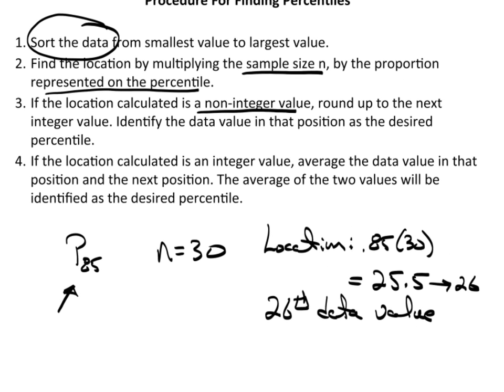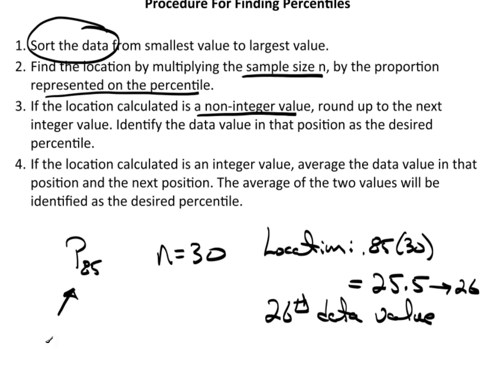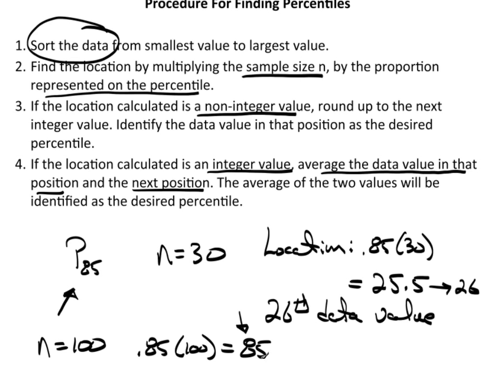Now if the location calculated is an integer value, so let's say n was 100, 0.85 times 100 equals 85. In that case, if the location is an integer value such as this, then I want to take the average of the data value in that position and the next position. So if I went to my 85th data value, of course after sorting, and let's just say the 85th happened to be 27, and then go to the next one, the 86th position, and let's just say that happened to be 29, I take that average, which is 28, and that is the value that I would call P85.